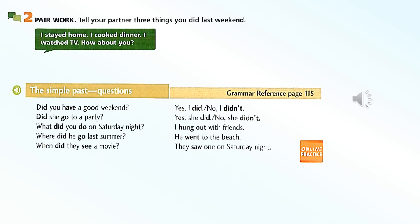Page 79, Language Practice. The simple past questions. Did you have a good weekend? Yes, I did. No, I didn't. Did she go to a party? Yes, she did. No, she didn't. What did you do on Saturday night? I hung out with friends. Where did he go last summer? He went to the beach. When did they see a movie? They saw one on Saturday night.